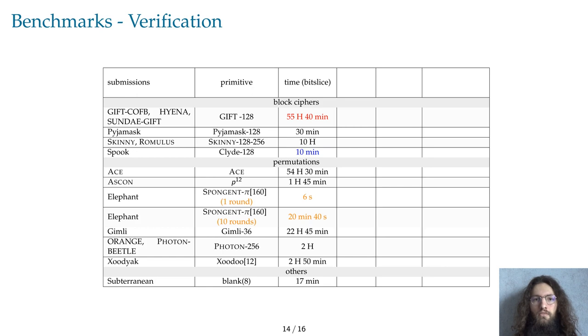The order of magnitude for the time it takes to verify the security of such implementations in the bit-probing model ranges from a few minutes to a few days. This disparity can be explained by the size of circuits, and more importantly by the number of multiplications, but it is also caused by the linear relationships between the inputs of multiplication gadgets.